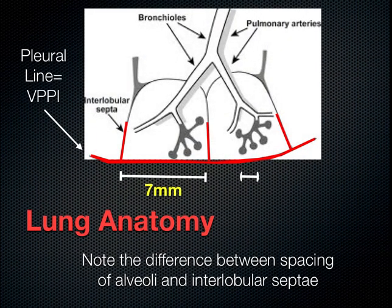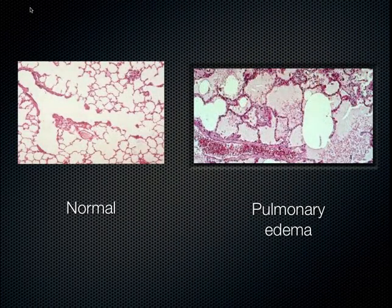It's important to review basic lung anatomy to understand the origination of these artifacts. The interlobular septae that come up to the pleural line are situated approximately seven millimeters apart in most people, while the alveolar sacs are approximately three millimeters apart. Note that difference for understanding the different types of B lines. Fluid that collects in these areas will create vertically oriented artifacts that are spaced similarly — for example, in pulmonary edema, where we see fluid-filled sacs and thickening of the interlobular septae.